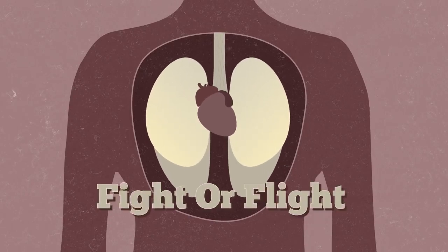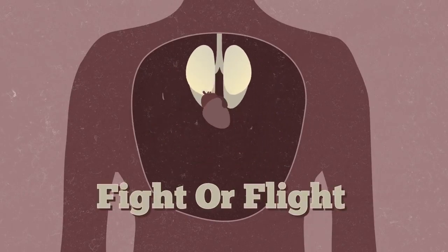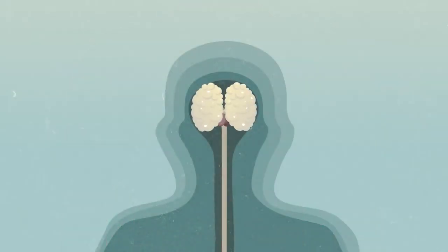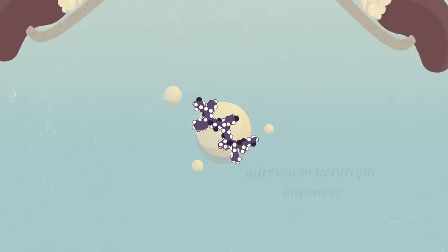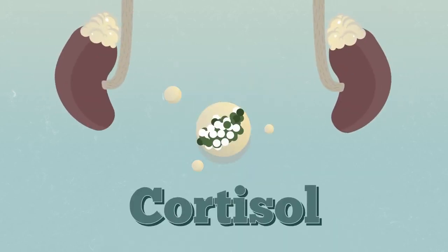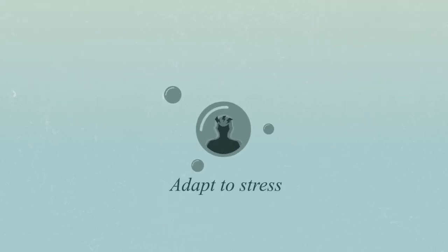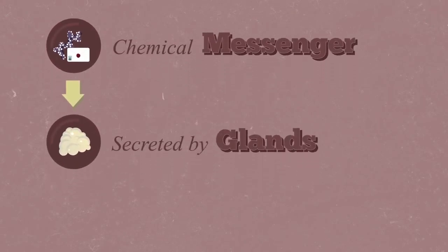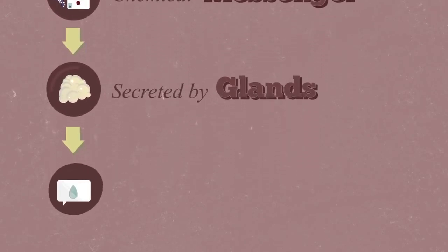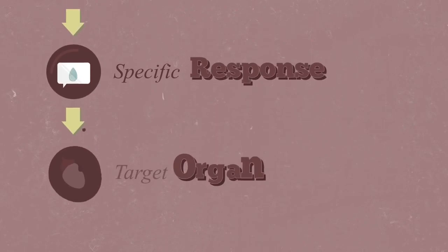This, along with other physiological responses, is known as the fight-or-flight response and is activated very quickly. At the same time, the hypothalamus signals the pituitary gland to secrete the adrenocorticotropic hormone, which travels to the adrenal glands to secrete a hormone known as cortisol. Cortisol acts on target organs to allow the body to adapt long-term to stress. So to review: hormones are chemical messengers secreted by glands into the bloodstream, and produce a specific response when they reach the target organ.